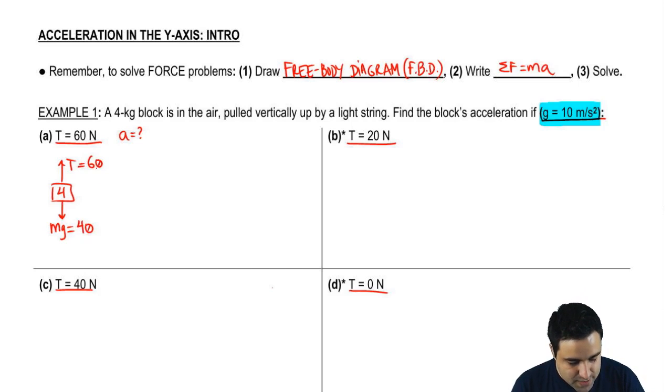This is 60, and I want to know what is the acceleration of this block. I'm going to use F equals Ma. Why? Because this is a force problem, and to find acceleration in the force problem, I use F equals Ma. Sum of all forces equals Ma.